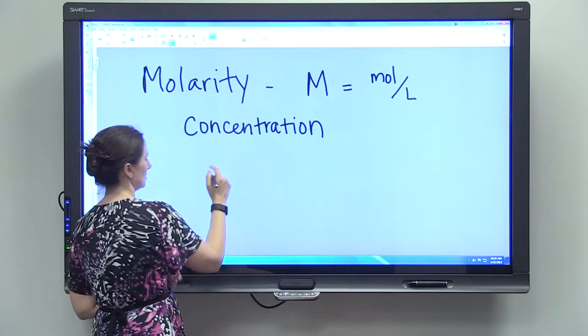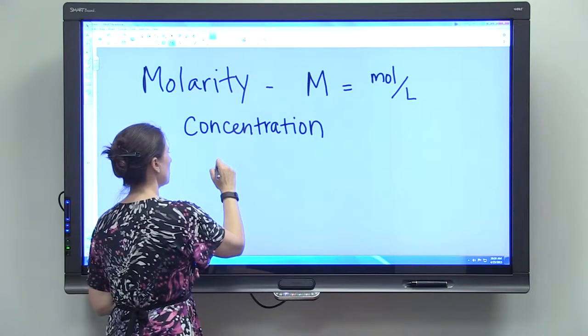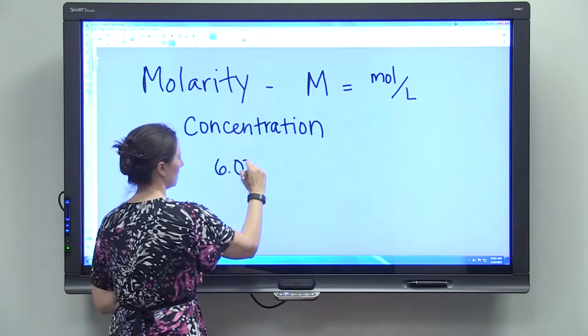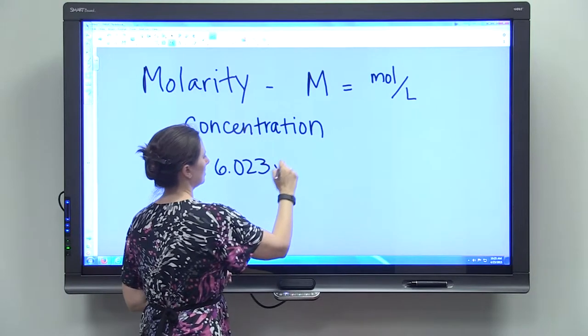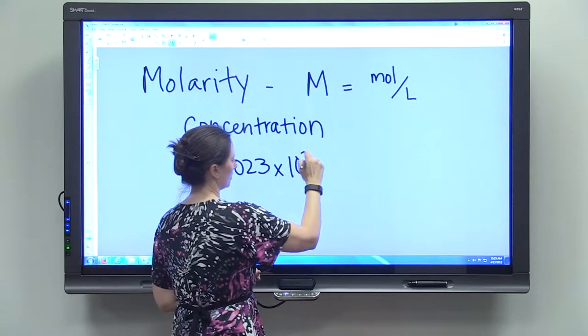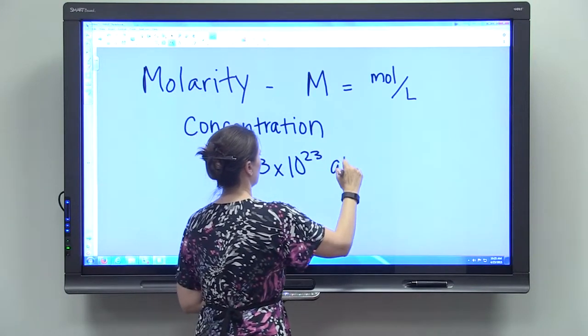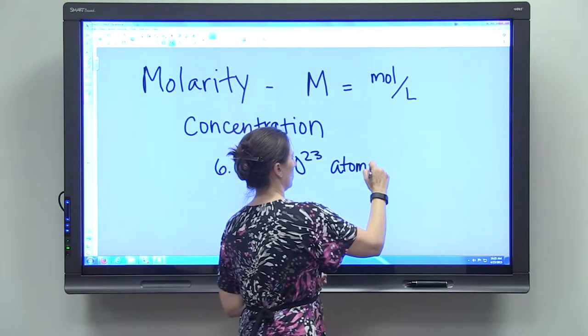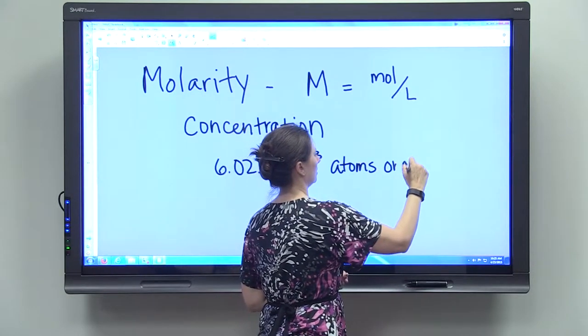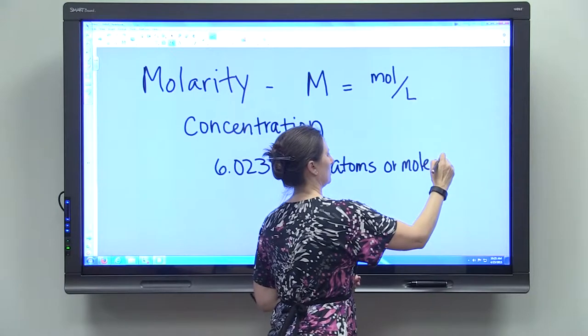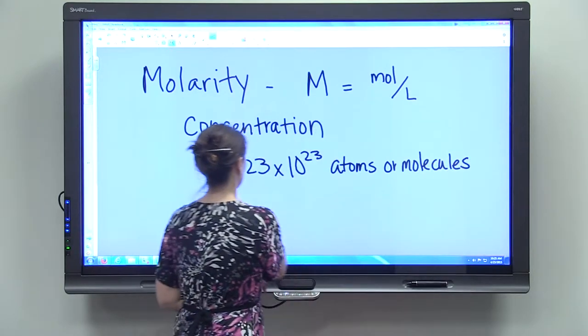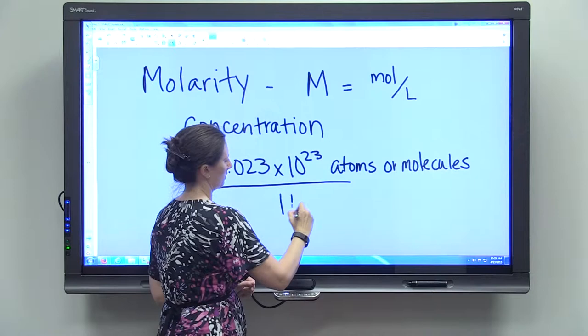Because it tells us the number of moles, it tells us that there are 6.023 times 10 to the 23rd atoms or molecules per one liter of solution.